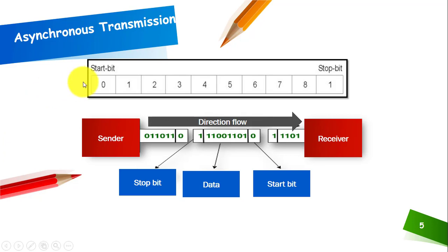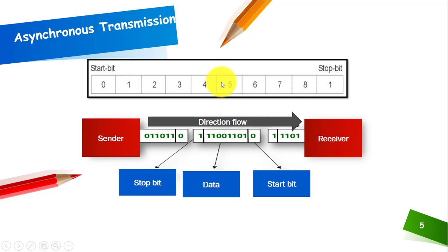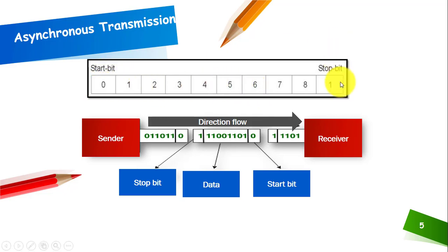This is a representation of asynchronous transmission. You can see here: one, two, three, four, five, six, seven, eight — these are eight bits. You can simply say eight bits or one byte, since one byte is equal to eight bits.